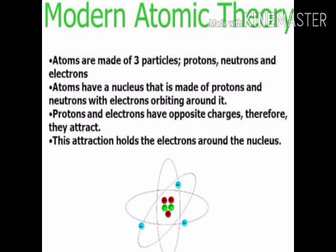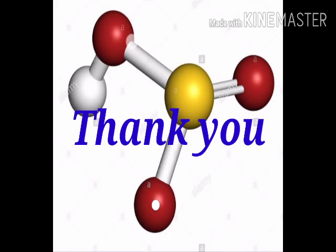Protons and electrons are oppositely charged particles, and therefore they attract each other. This interaction between protons and electrons holds the electrons around the nucleus in their fixed orbits, keeping them revolving around the nucleus. With this, we come to the end of this particular module, and we will continue with atomic structure in the third module as well.